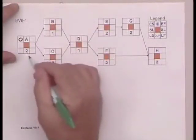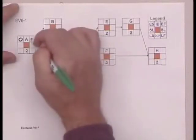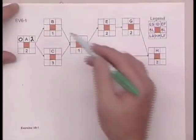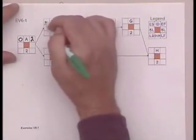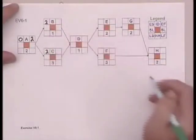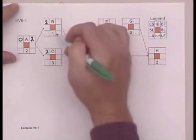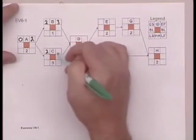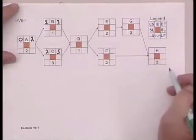And since that activity is supposed to take two days, let's say, the earliest finish time is two days. Once that activity is done, then B and C can start. Those become the early start for B and C. The duration of B is one, so it's three. The duration of C is three, so it could be done on the fifth day.